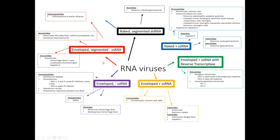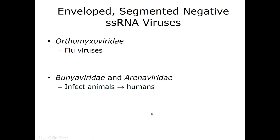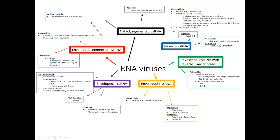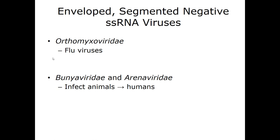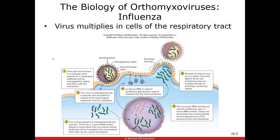We're going to start with the enveloped, segmented, negative-strand single-stranded RNA group. In this group we have the orthomyxoviridae, the bunyaviridae, and the arenaviridae. The orthomyxoviridae are known for causing the flu. The bunyaviridae and arenaviridae are both zoonotic — animal viruses that humans generally pick up through contact with animals.